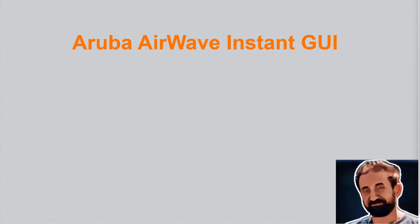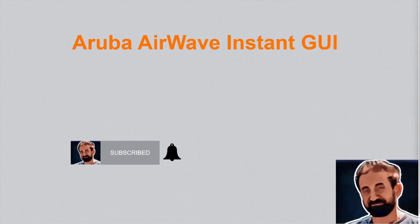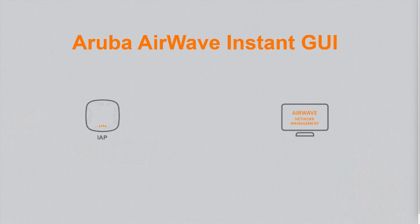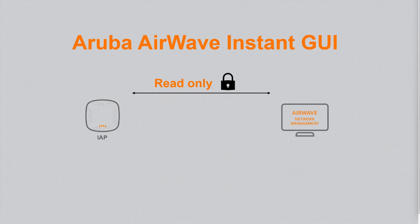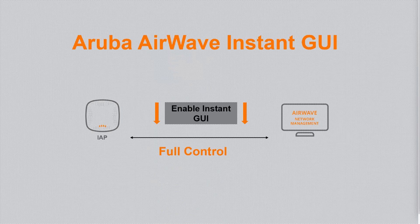Hi guys, it's me again. In this video we'll look at how to manage Instant AP fully from the AirWave management platform. Initially when you add the access point, best practice is for the Instant AP to be read-only. Once you enable the Instant GUI, the AP will be moved from read-only into full control, and then we can do all the configuration of the Instant AP from AirWave.